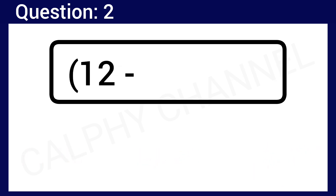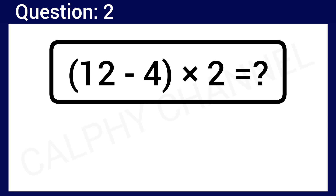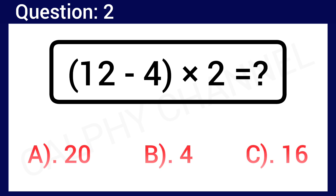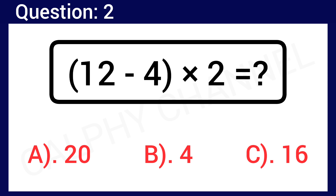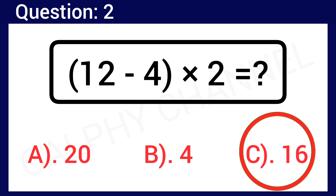Question number 2: 12 minus 4 in the bracket times 2 is equal to what? Drop the correct answer in the comment section below. Option A: 20, Option B: 4, Option C: 16. The correct answer is Option C, which is 16.